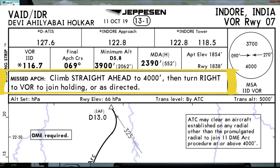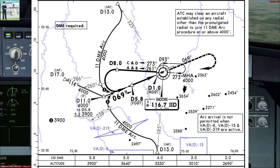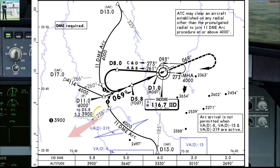This was the briefing for the overhead approach. Now let us see the modifications if we are doing an 11 DME arc followed by the VOR approach runway 07. Assuming ATC has asked us to approach on radial 185, the initial approach fix in the plan view is at 13 DME. At 13 DME, we shall commence our first turn to the left to join the 11 DME arc at 4000 feet. The lead radial in the arc is 238.